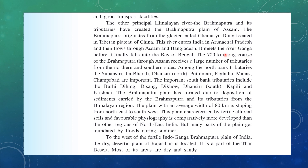Brahmaputra's course through Assam is 700 km long, and in Assam many tributaries join it, which is why the Brahmaputra river is so large. It receives tributaries from both northern and southern banks. North bank tributaries are: Subansari, Jiyabharali, Dhanasiri, Uthimari, Pagladiya, Manas, and Champavati. South bank tributaries are: Burhi Dihing, Disang, Dikho, Dhanasiri, Kapili, and Krishna.